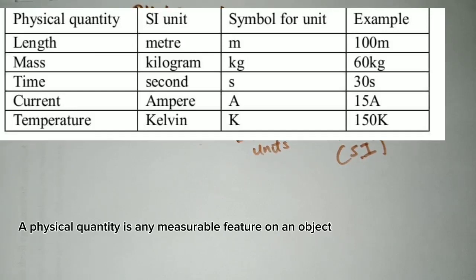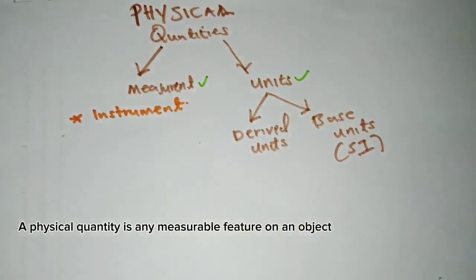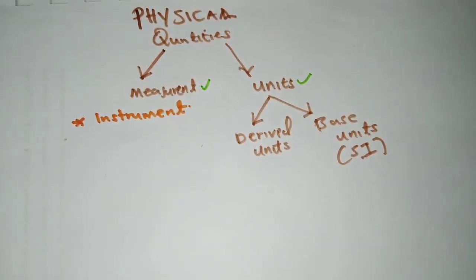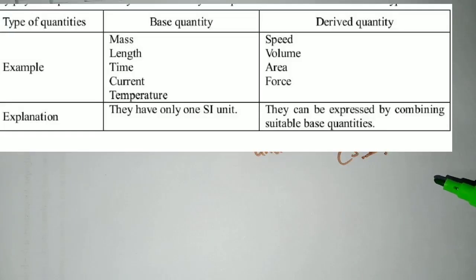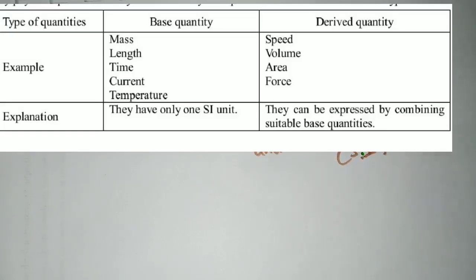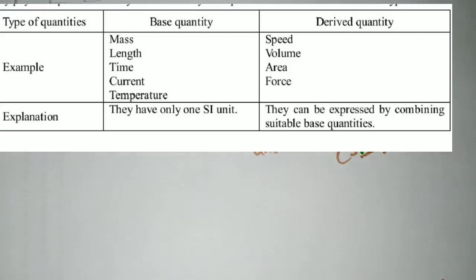We said there are only two aspects under physical quantities: measurement and units. So under units, we have derived units and base units. Base units only have one SI unit, but derived units are a combination, and we gave examples.